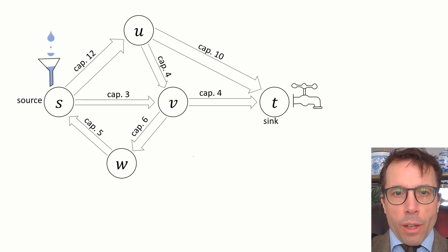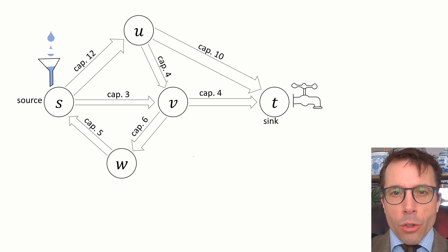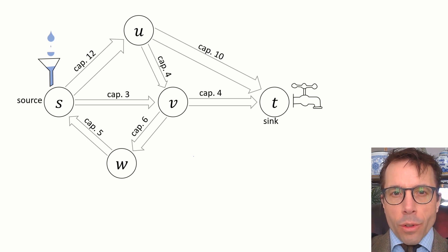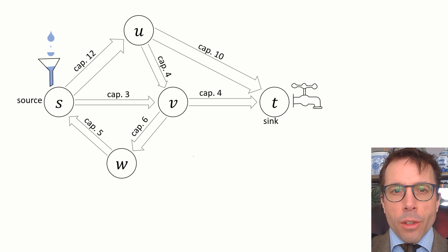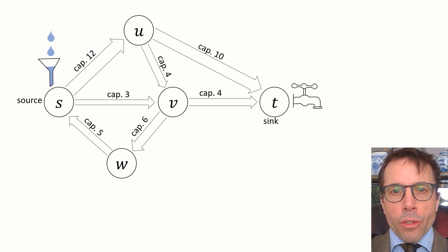There's a flow of stuff coming in at the source, and we want to pipe it to the sink through our pipe network. We'll imagine that there's an unlimited amount of stuff available at the source, and the only limit is the capacity of our pipe network. And the question is, how should we pump it through to the sink?